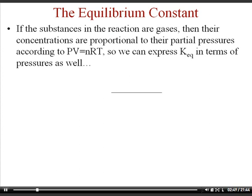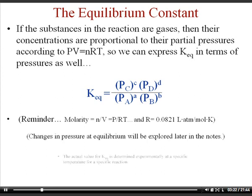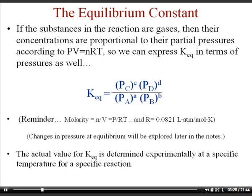If substances in the reaction are gases, their concentrations are proportional to their partial pressures. So you can express the equilibrium constant in terms of concentrations (molarity) or change them into pressures. You'd have the pressures of gases C and D divided by the pressures of substances A and B, raised to their stoichiometry powers. To convert from molarity to pressure, you can use PV = nRT. The actual value for K is determined experimentally at a specific temperature, so the K value will change with temperature.